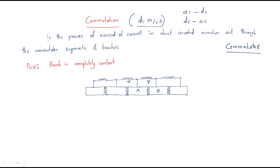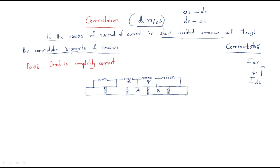Commutation is defined as the process of reversal of current in a short-circuited armature coil through the commutator segments and brushes. Reversal of current means: if we have AC current, it should be converted into DC current; or if we have DC current, it should be converted into AC current. This process involves both commutator segments and brushes.